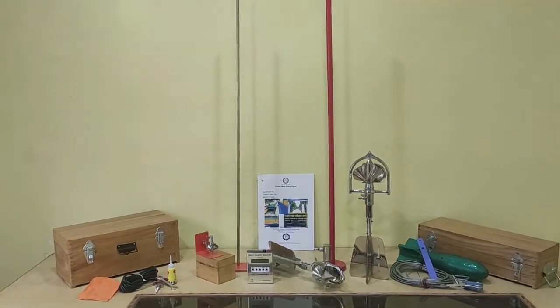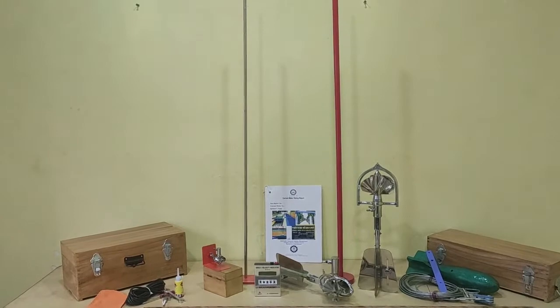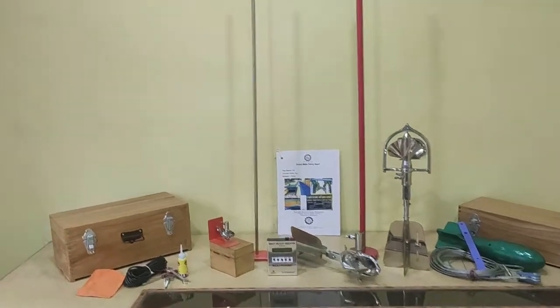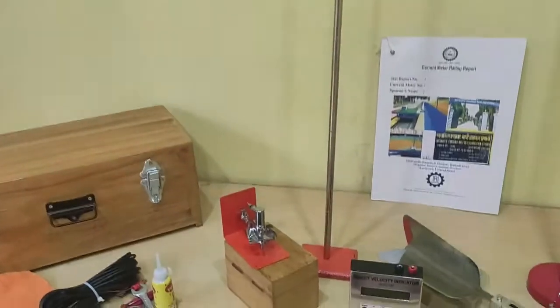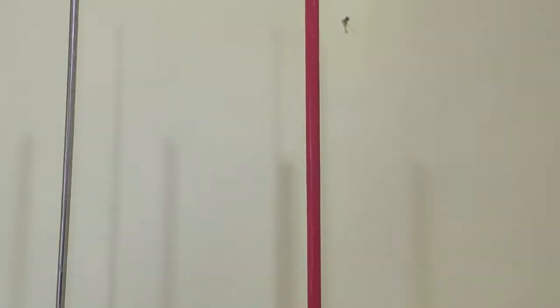So the wetting rod comes with these current meters, generally 1.2 meter length. This is the wetting rod of the pygmy type water current meter and this red one is the wetting rod that comes with the cup type and propeller type water current meters.